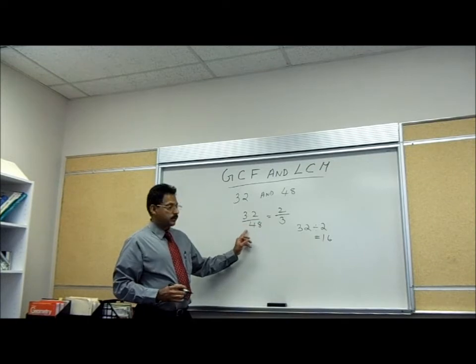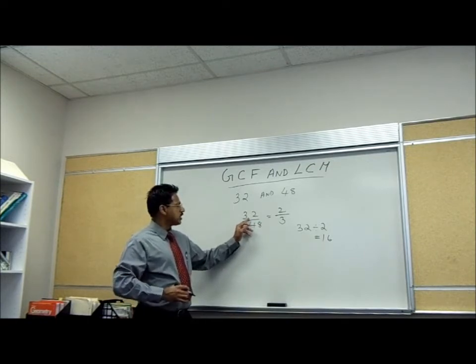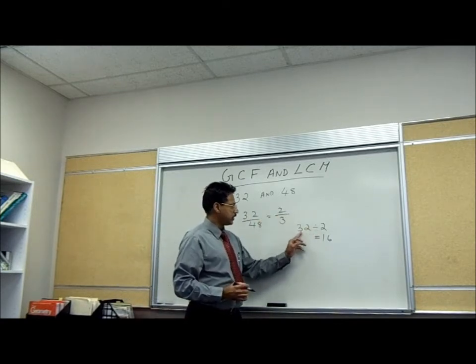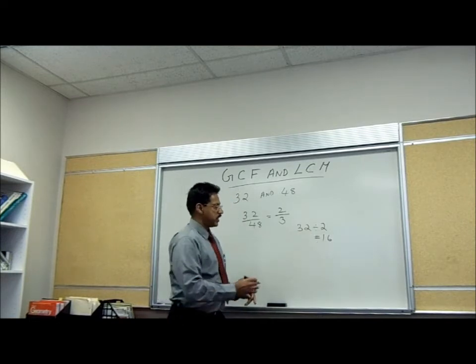So you divide the numerator of the original fraction by the numerator of the reduced terms, 32 over 2, that gives 16. That's the GCF.